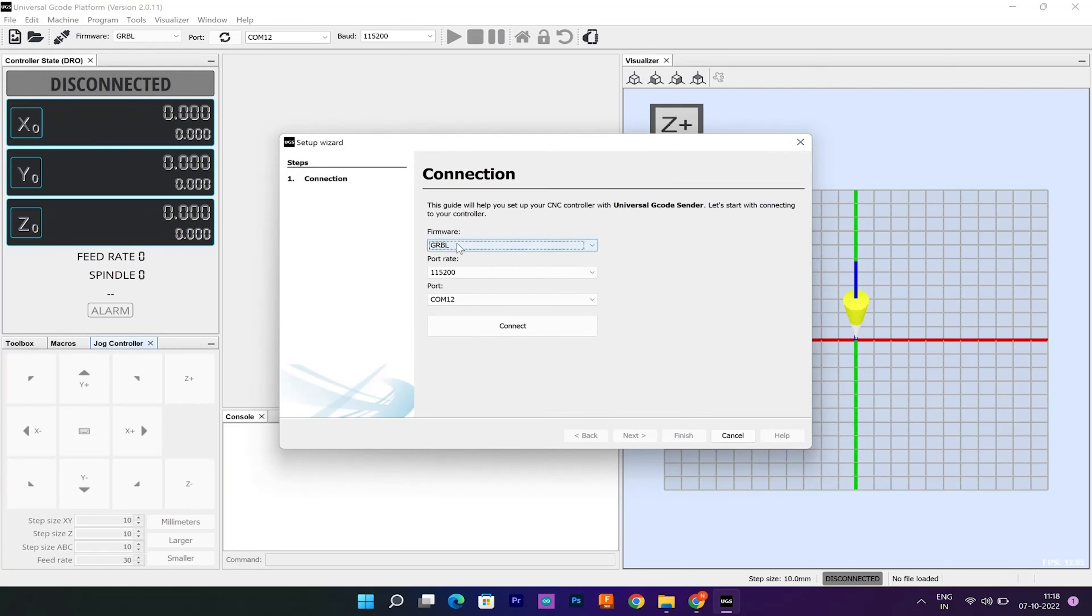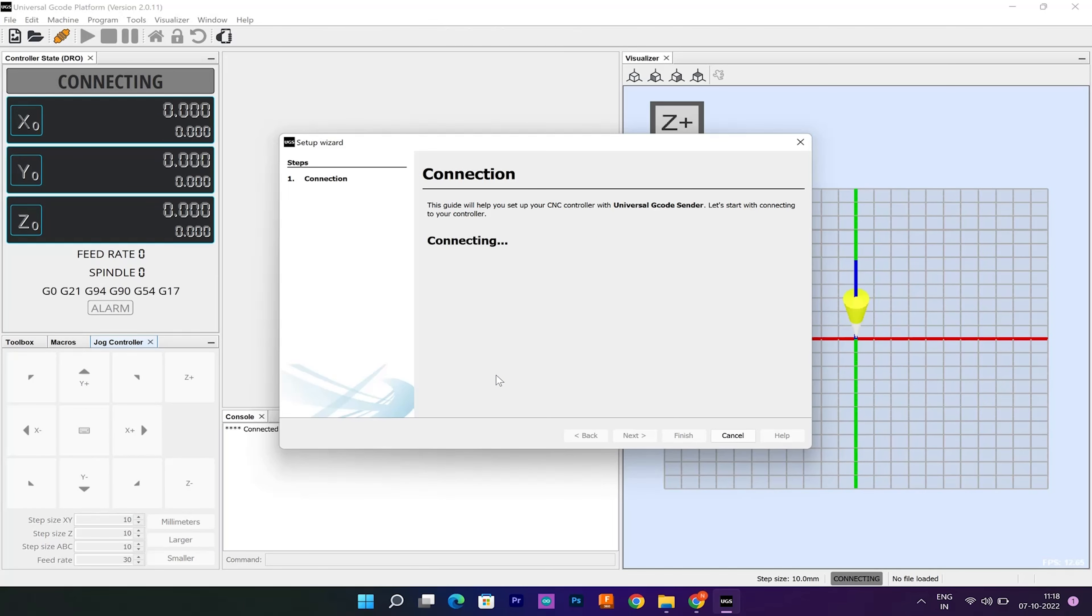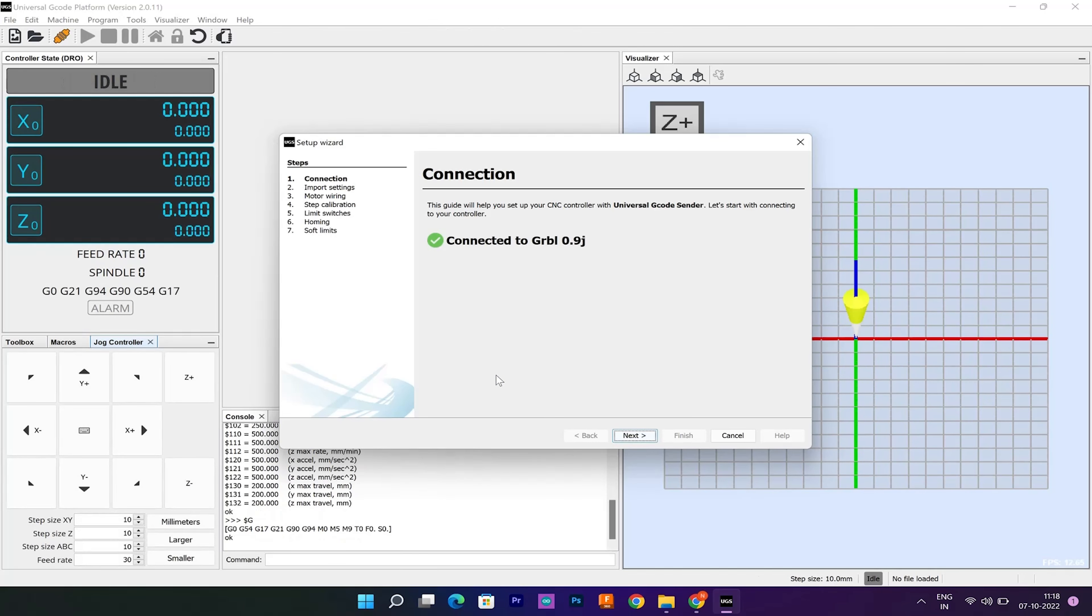The first step here is to select the baud rate which would be 115200 and the port to which our Arduino is connected. Once we connect the Universal G-code Sender with Arduino, in the next step, we can check the direction of moving of the motors.